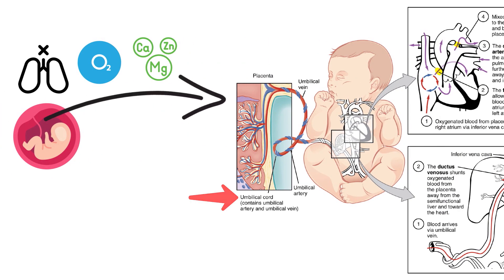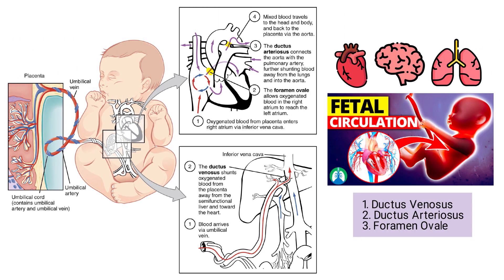Oxygenated blood from the placenta enters the fetal body through the umbilical vein and flows into the hepatic circulatory system. Approximately one-third of this blood goes to the lower trunk and extremities, while the other two-thirds flow through the ductus venosus and directly into the inferior vena cava.